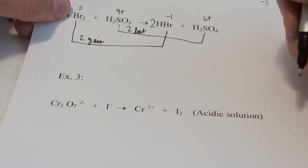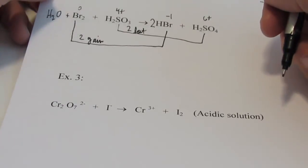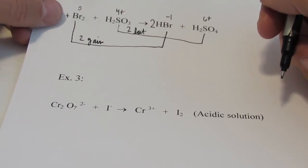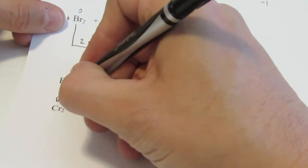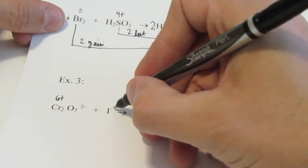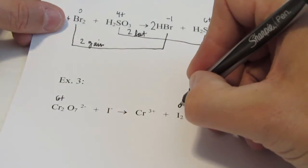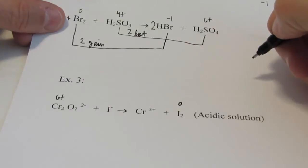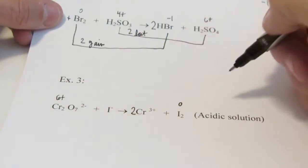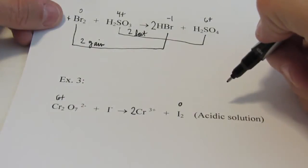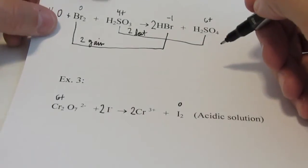You can pause the video at any time and try these on your own. Example three — I'm telling you this is an acidic solution, which means we'll definitely be using protons to balance the ionic charge. Let's assign oxidation numbers. Chromium is 6⁺ on this side, iodine is −1. Chromium is 3⁺ on the other side, and iodine is in its elemental form with an oxidation number of zero.